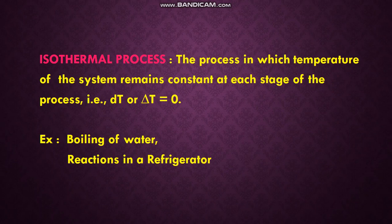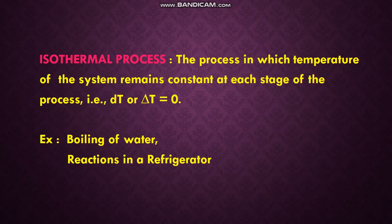Next, we will look at isothermal, isochoric, isobaric, and adiabatic processes. First is the isothermal process — the name itself indicates this: 'iso' means same, 'thermal' means heat or temperature. The process in which the temperature of the system remains constant at each stage is an isothermal process, that is dT equals zero. Examples include boiling of water and reactions in a refrigerator, where temperature is maintained the same throughout.